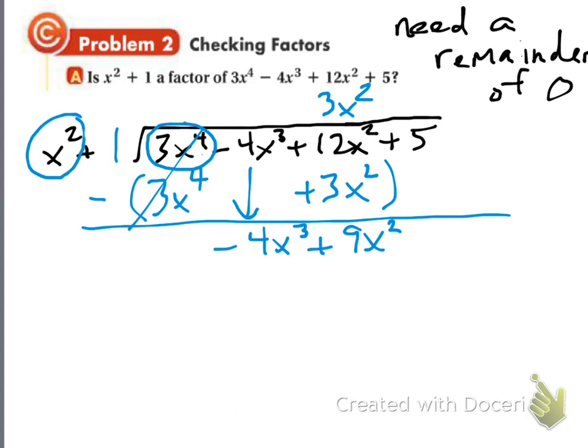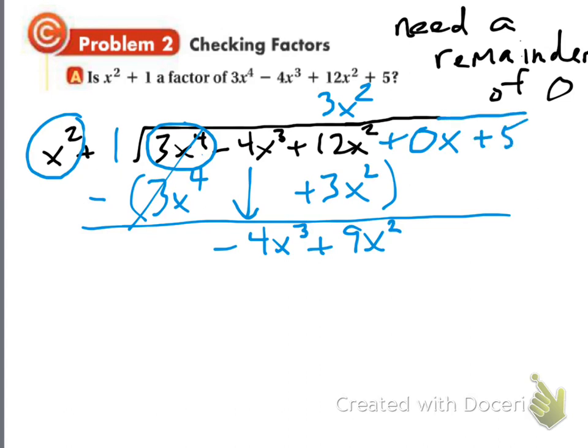One thing I may have forgotten to tell you — what's missing? I have an x to the 4th term, an x to the 3rd term, an x squared term, and then the constant. What's missing is the x term. We went x to the 4th, x to the 3rd, x squared — and apparently we skipped x and went right to the constant term. Here's how you deal with that: we're going to account for it by putting 0x right there as a placeholder. Then the plus 5.